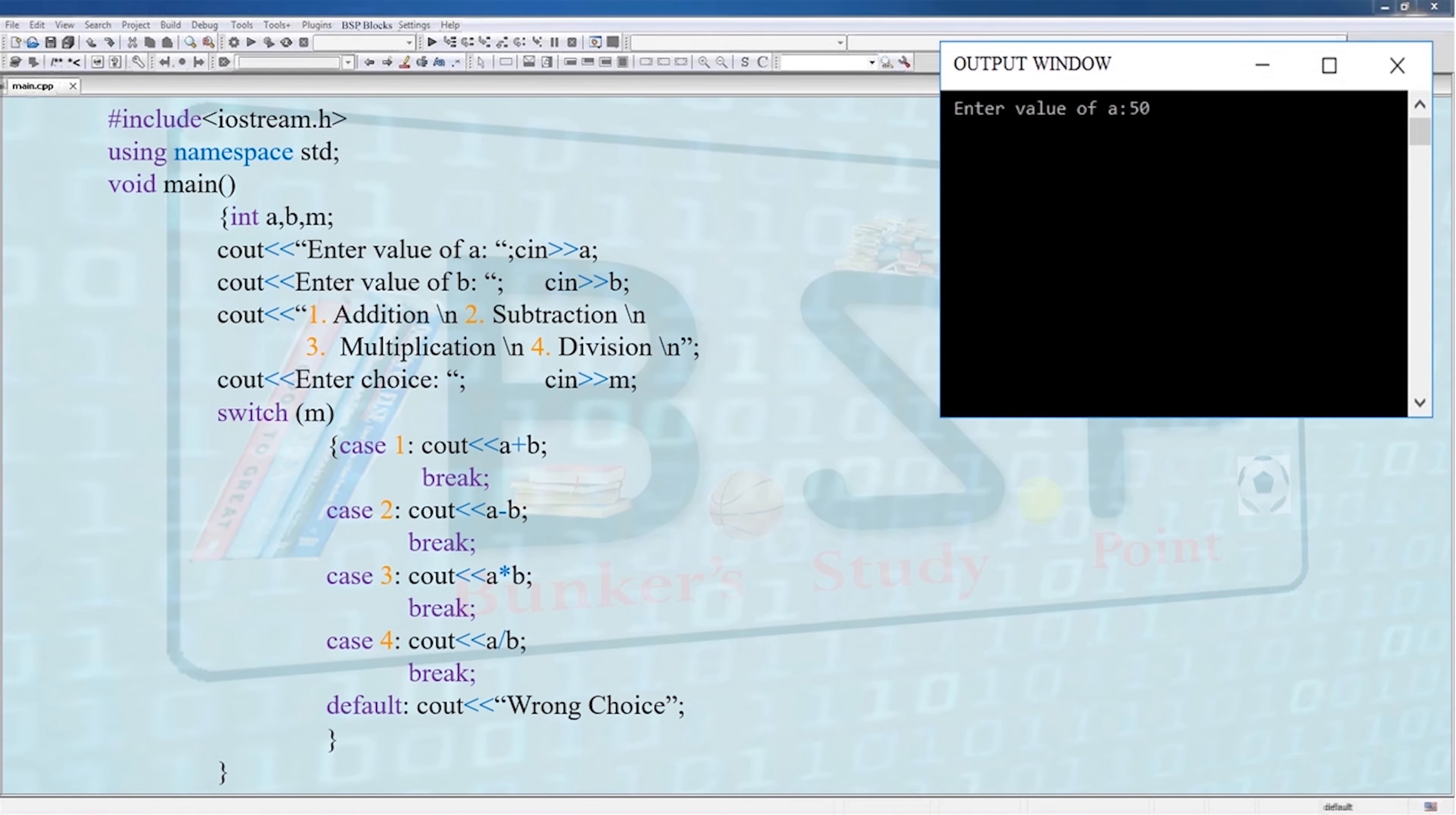We will compile this program once, taking the same values. For a we take 50. For b we take 25. Then choice is fourth, that is for division, and we have the answer as 2.